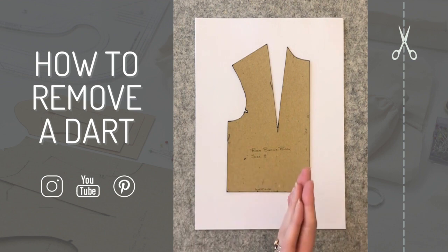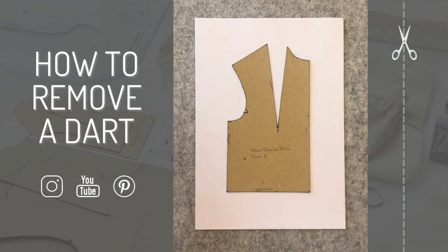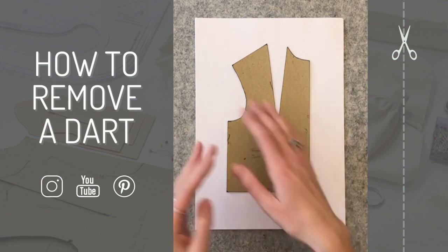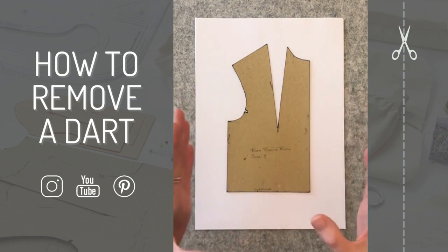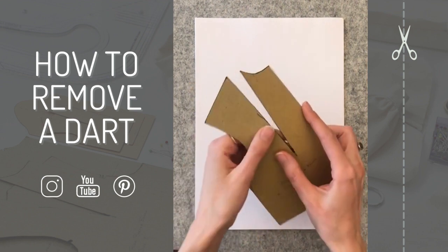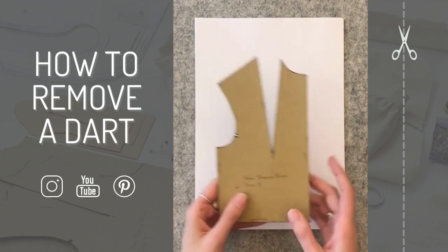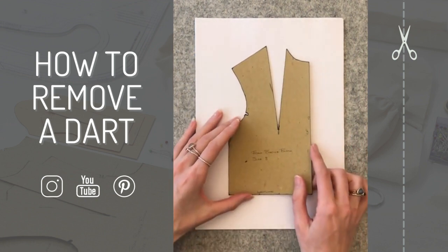When you want to remove a dart, it's normally because you want to create something that's a bit more oversized, so you already have enough fabric and movement allowed in the garment. You're fine to remove the dart and get rid of the shaping because darts create shaping for the body. If you're creating something oversized, you don't necessarily need that.